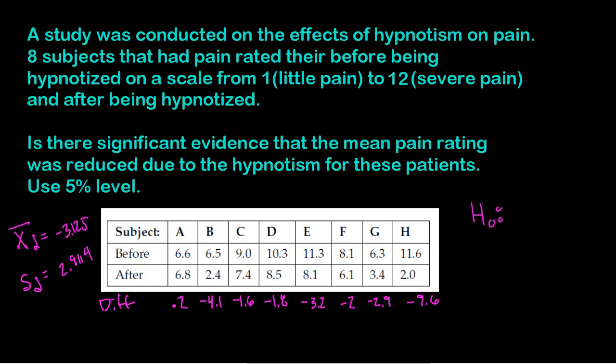Now, the null and the alternative. Well, the null would be status quo. The true difference, the true mean difference is zero. I'm going to assume that there is no difference. Hypnotism doesn't do anything. And the alternative is, remember, I wanted to reduce your pain. So the alternative would be that the true difference is less than zero because less than zero would show that you did have less pain. That was step one. Step two is those conditions.